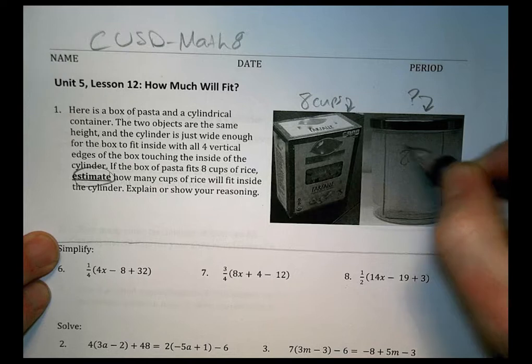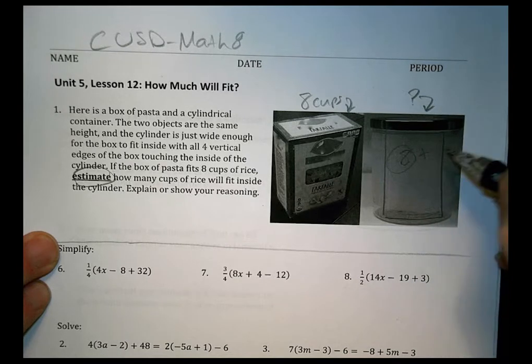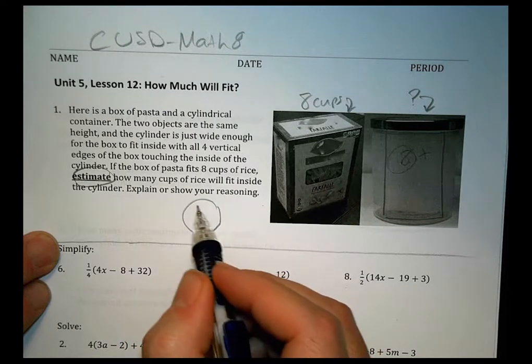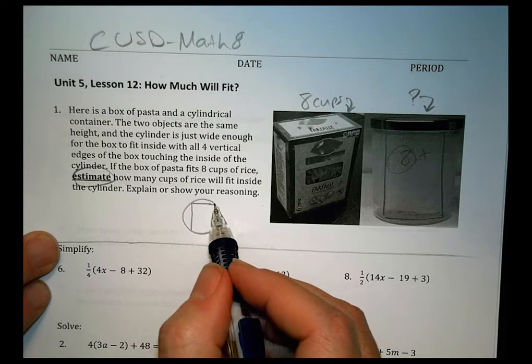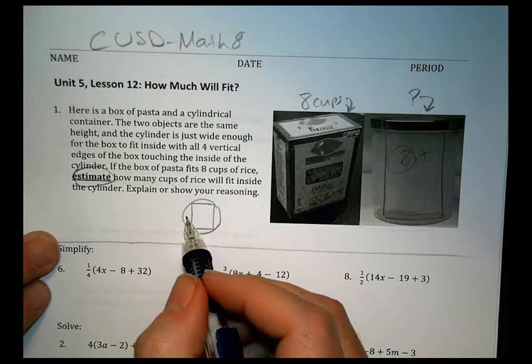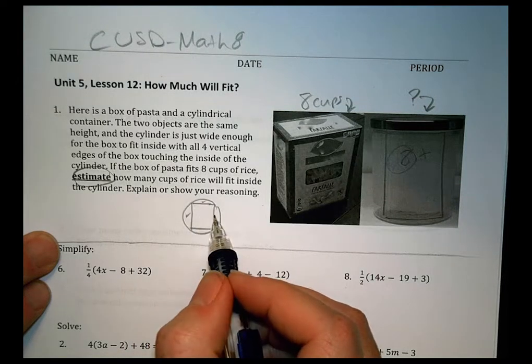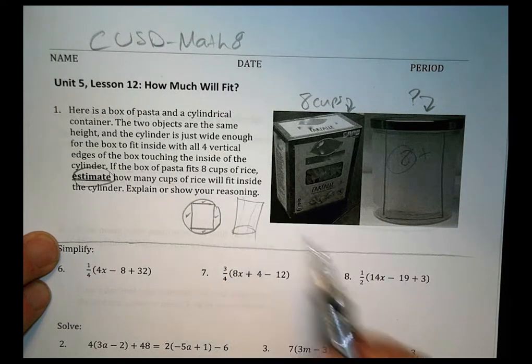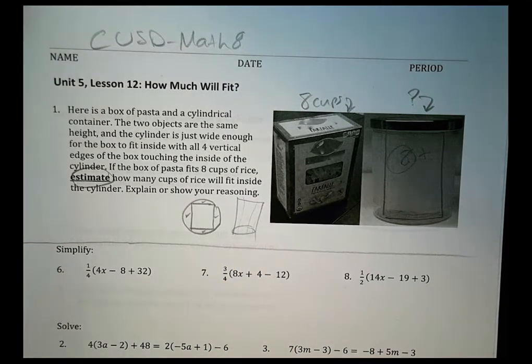For sure you know you're going to have at least 8, but you're going to be able to have some more because there's going to be some space around the edges. Think about if you had a circle and you put a square inside of it, you're going to have space here, here, here, and here, and since you're talking about a cylinder, that space is going to be all the way up as well.